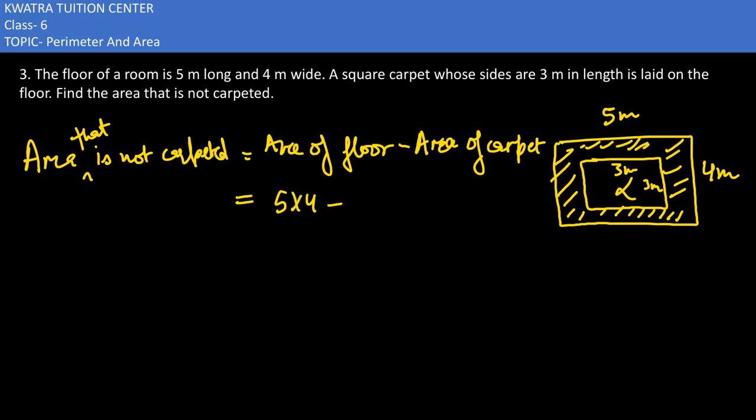5 into 4, minus would be area of the carpet, 3 into 3 would be this. So 5 into 4 is 20, 3 into 3 is 9, 20 minus 9 would be 11 meter square.